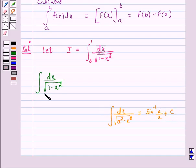Therefore, the integral of dx upon under root of 1 minus x square is equal to sin inverse x. So according to our key idea, this is equal to F(x).